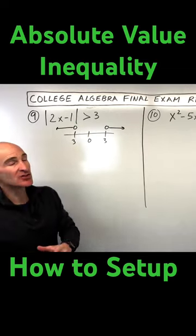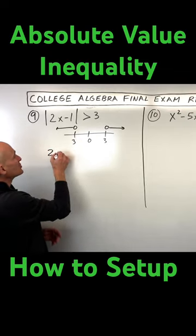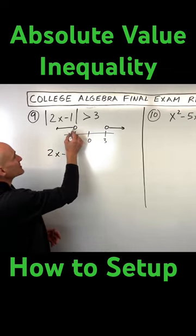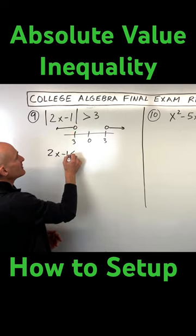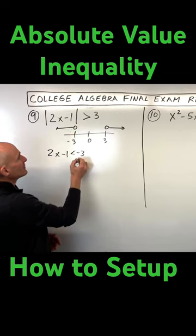So what we do is we split this into two inequalities. We say 2x minus 1 has to be less than negative 3, right, or